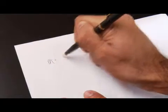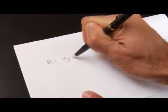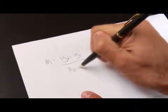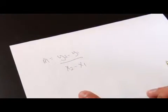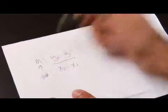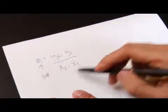The slope formula is m equals y2 minus y1 over x2 minus x1. M stands for slope. The y2 minus y1 are the y points and the x2 minus x1 are the x points.